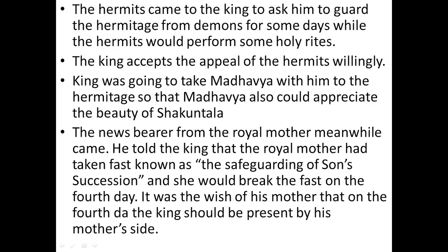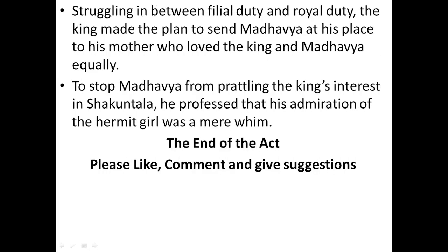The King was going to take Madhya with him to the hermitage so that Madhya could also appreciate the beauty of Sakuntala. However, in the meantime, a news bearer from the royal mother arrived. The news bearer told the King that the royal mother had taken a vow known as the safeguarding of the son's succession, and would break her vow on the fourth day. It was the wish of his mother that the King should be present by her side when she broke her vow. Struggling between filial duty and royal duty, the King made the plan to send Madhya to his mother in his place.